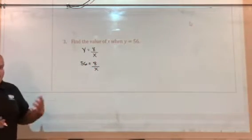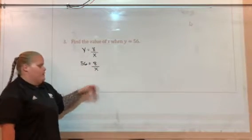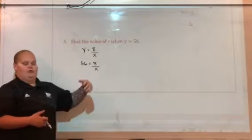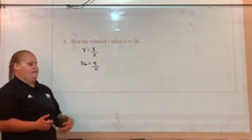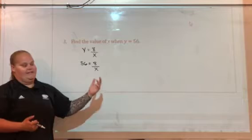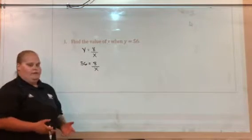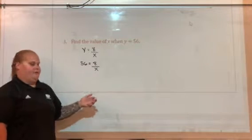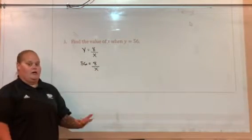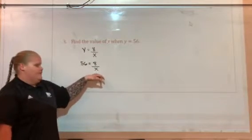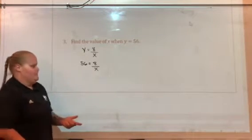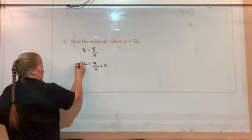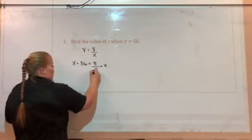Now this is where a lot of students kind of struggle. They see x in the denominator and they're not sure how to get it out. A lot of times they'll multiply by 8 because that's the other number on the same side as x. Really though, you need to get rid of the fraction. And to get rid of the fraction, we need to multiply both sides by the denominator. The denominator in this case is x. And it's alright, we can multiply both sides by x. It's fine, it's just going to move it over to the other side.